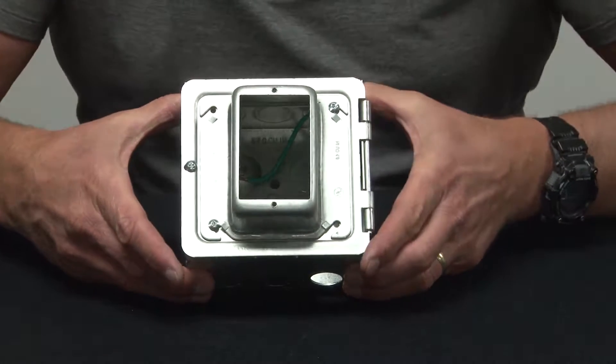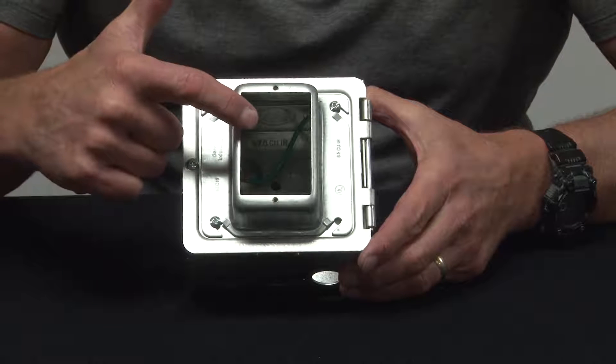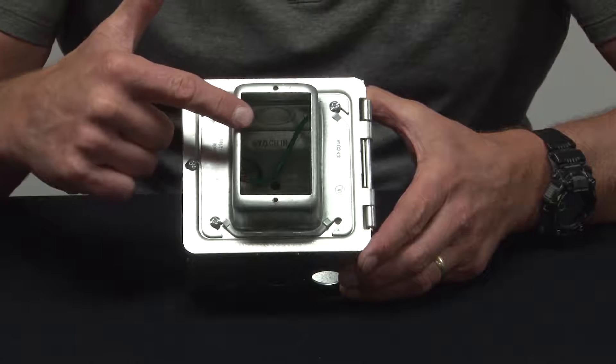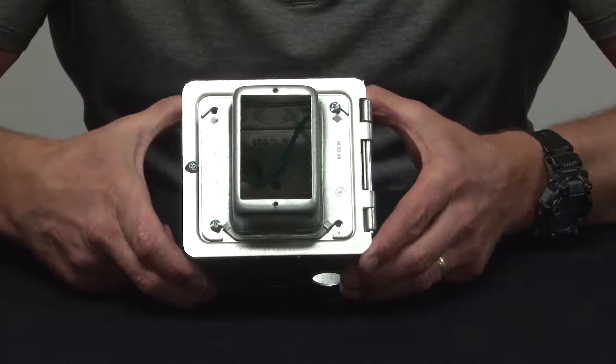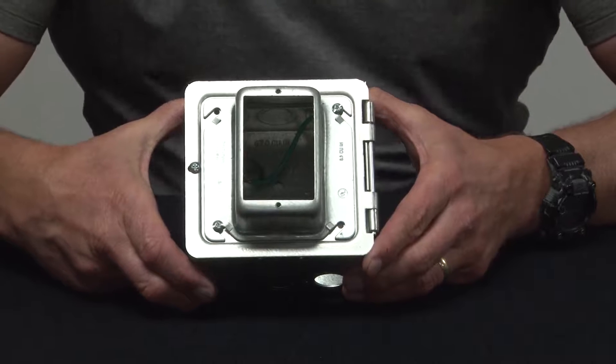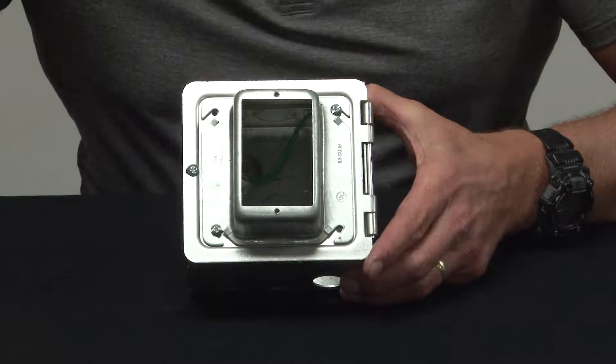What's great about this hinged prefab box is that it allows the installer to screw down a device on the plaster ring with flying leads inside the box. They can do this in their prefab or pre-construction shop, transport these box assemblies to a job site, and when they get to the job site and install it in place.